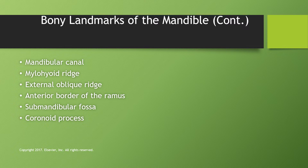Continuing with mandibular landmarks: we will also look at the mandibular canal, mylohyoid ridge, external oblique ridge, anterior border of the ramus, submandibular fossa, and coronoid process.